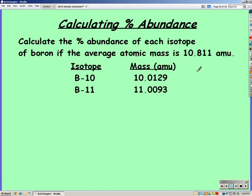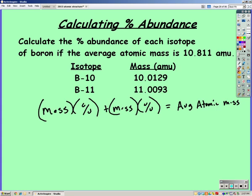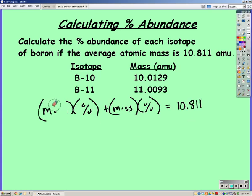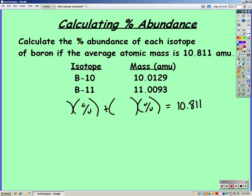But now, we have the average atomic mass, and so it's going to be the same equation. Mass times percent plus mass times percent is equal to the average atomic mass. We plug in our average atomic mass, 10.811. We know the masses of each of our isotopes, so we can plug those in.